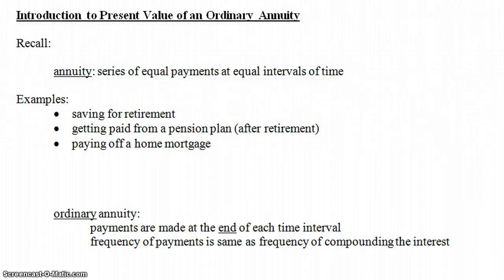In this video we're going to do an introduction to the present value of an ordinary annuity. In the previous section we talked about the future value of an ordinary annuity. An annuity is a series of equal payments made at equal intervals of time. An example would be saving for retirement — putting $200 at the end of every month into some account that gets a certain interest rate and letting that money grow over time.